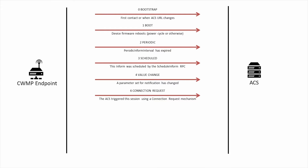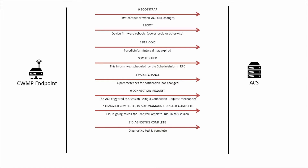The six connection request event occurs when an ACS uses the special connection request mechanism to trigger the CPE to begin a TR-069 session. The seven transfer complete event occurs when the CPE has successfully downloaded or uploaded a file that the ACS needs to know about, most often because of the use of the download or upload RPCs. The ten anonymous transfer complete event occurs when a transfer completes that was not requested by the ACS but that the ACS wishes to know about. The eight diagnostics complete event occurs when the CPE has completed one or more diagnostic tests that are defined in and activated through the TR-069 data model in the CPE.